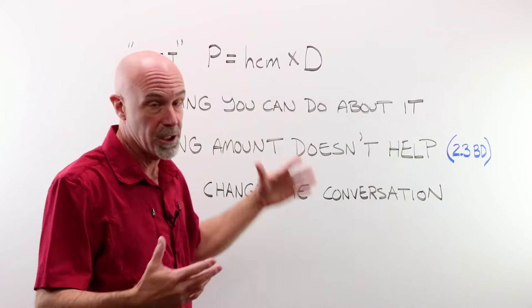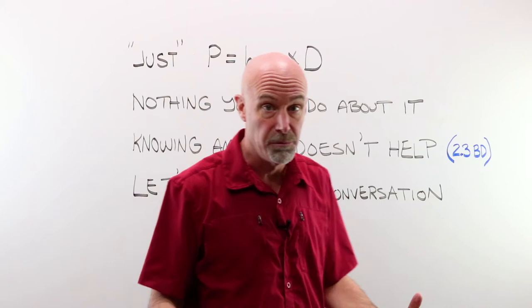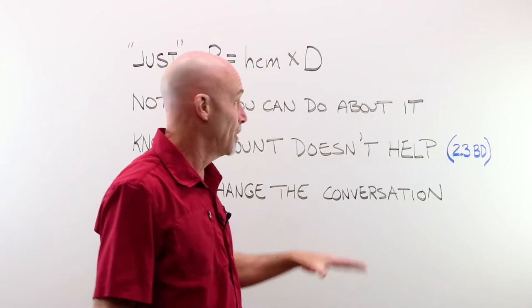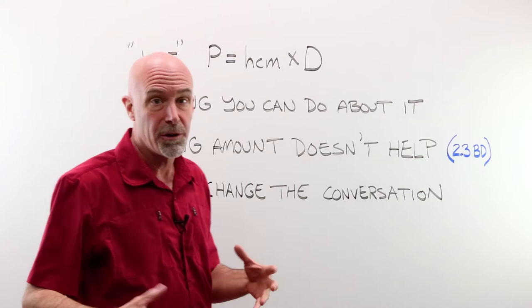P is equal to HCM times D, which you should be familiar with. HCM, in this case, is relatively easy to determine. D is simply your add power. Really not a whole lot to this. We're not talking about any special case scenarios. We're not talking about an application for slab off or something. We're talking about routine prescriptions.